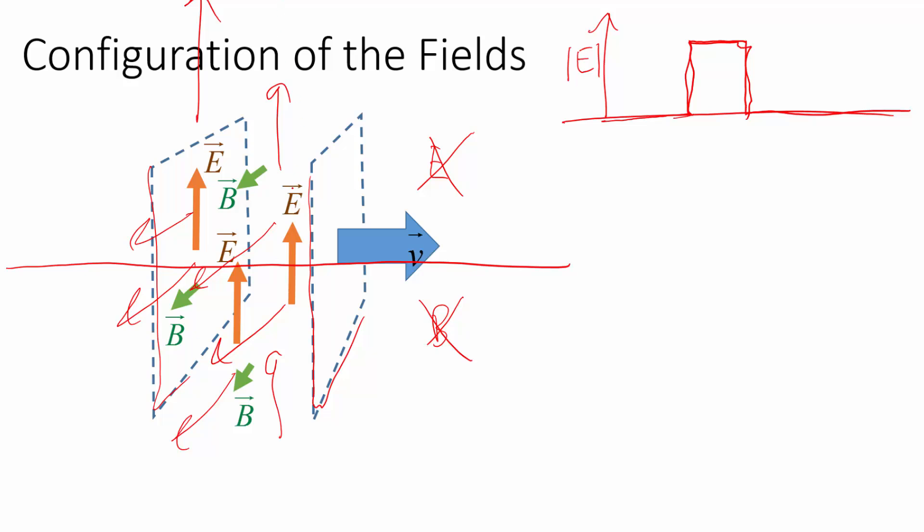And it's an infinite slab going all the way to plus infinity, minus infinity, and out front and back, so it's infinite in two dimensions. One more thing we need: the slab can't just be parallel, it has to be moving. So this entire slab is moving in this direction at some currently unknown velocity v.